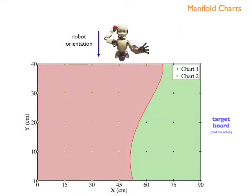Targets on the green region of the board, located to the left of the robot, had their policies embedded in one of the charts. Targets to the right of the robot, on the pink region, had their policies embedded in the second chart.